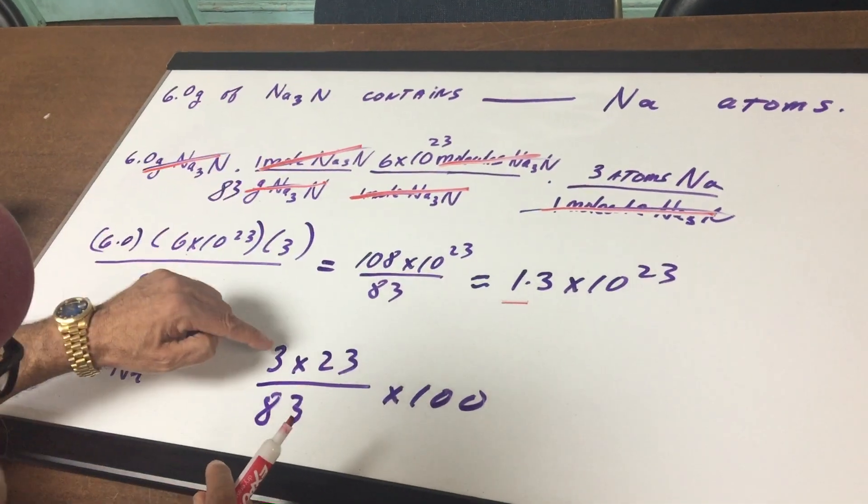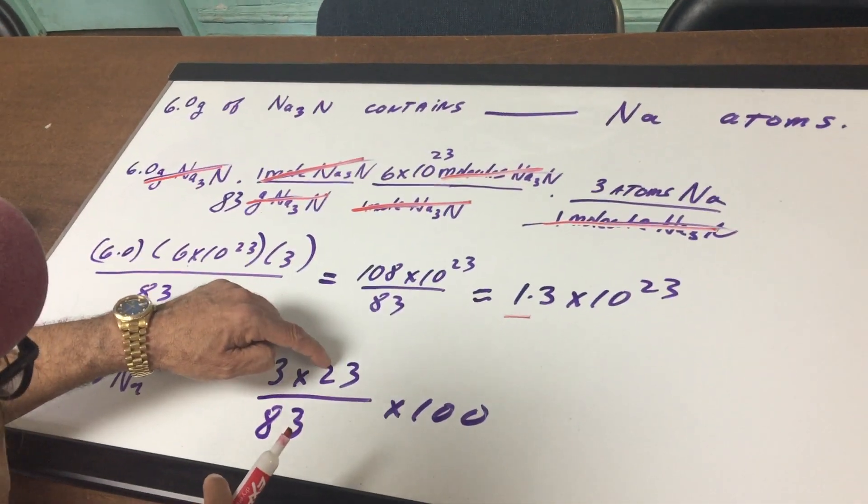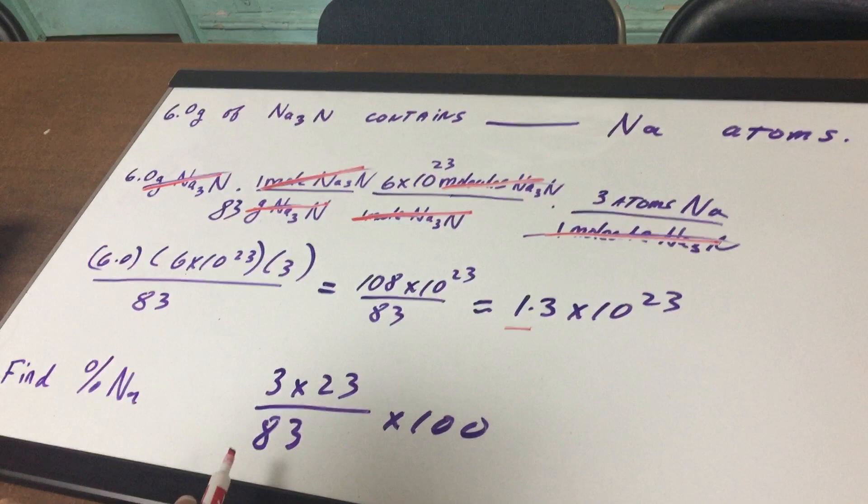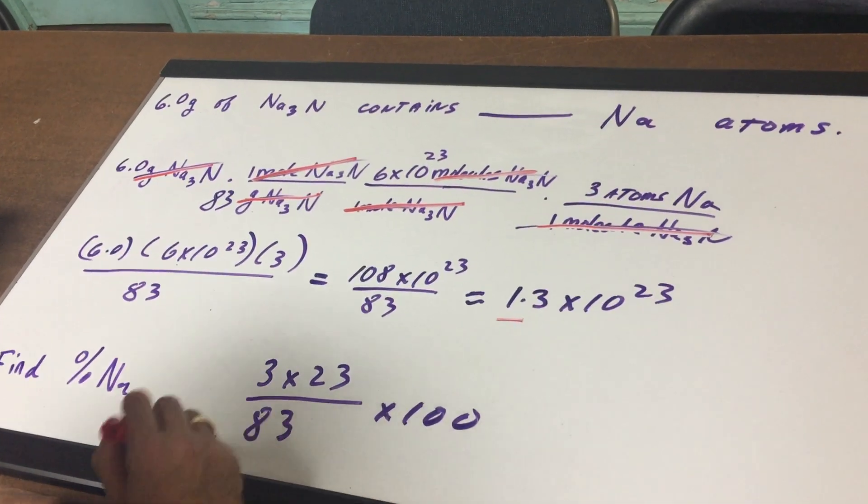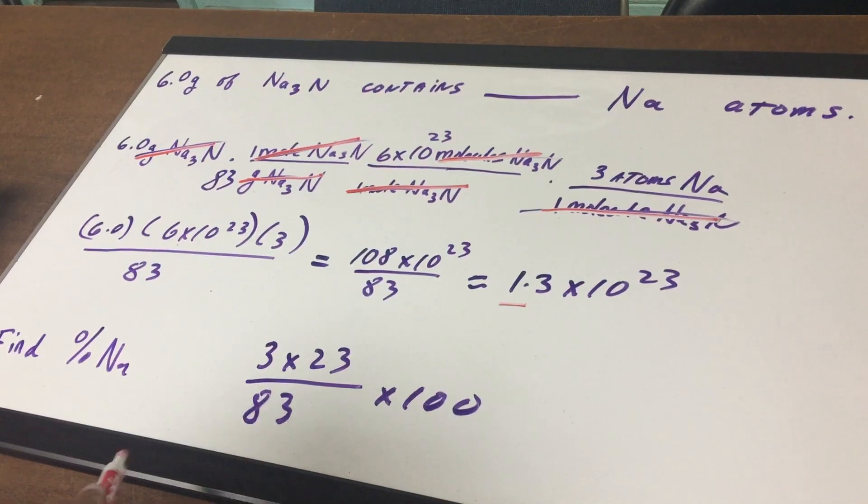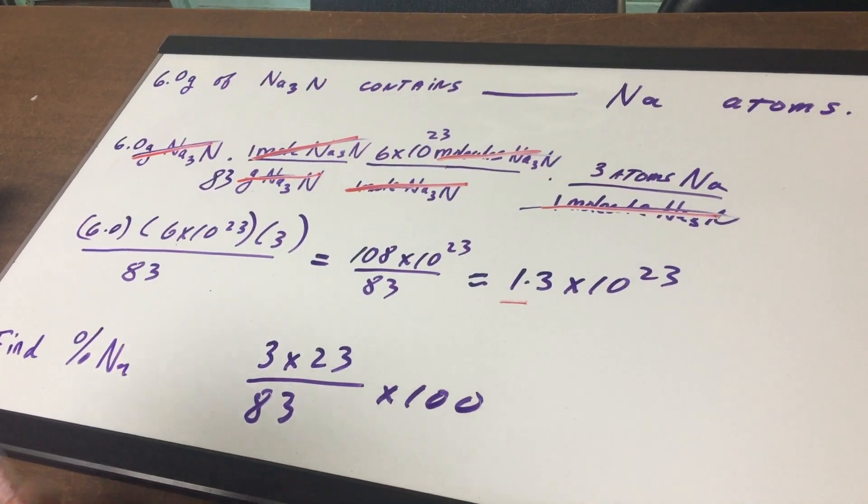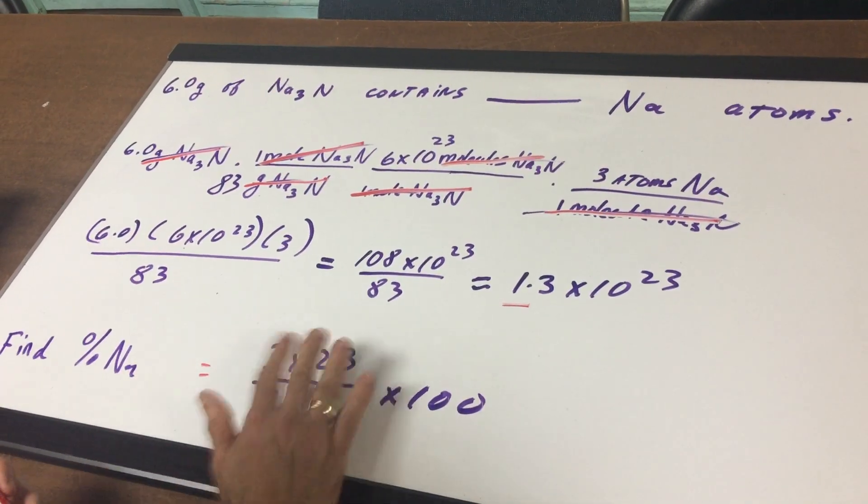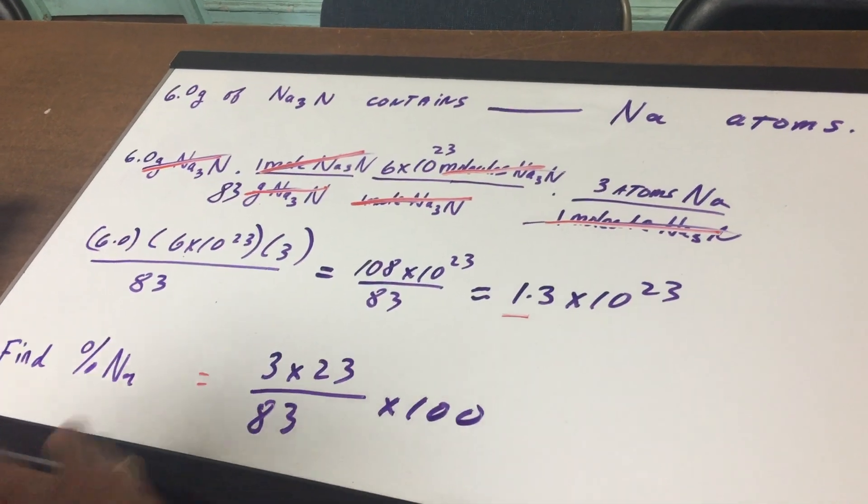Well, there's three sodiums. They weigh 23. The total weight of the sample was 83. And I'm going to keep it in this form: 3 times 23 over 83 times 100. And many times the DAT exam will just have it set up like this.